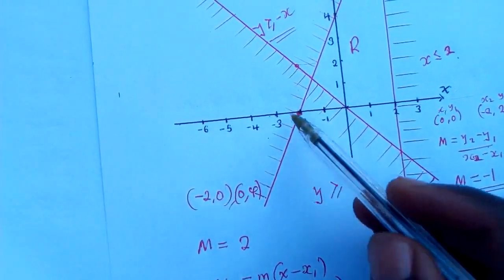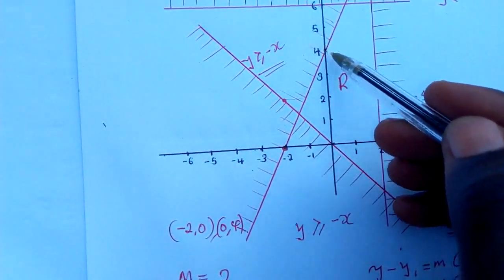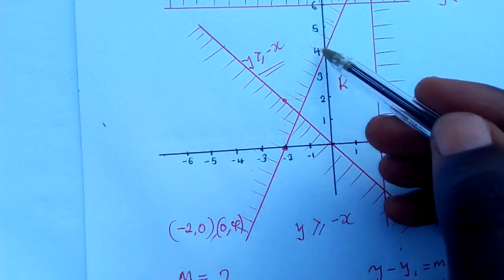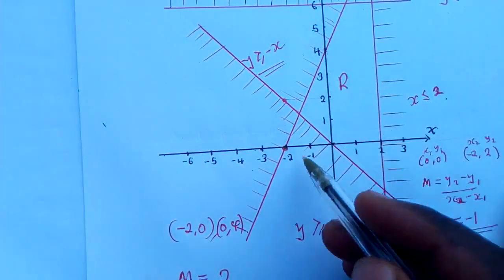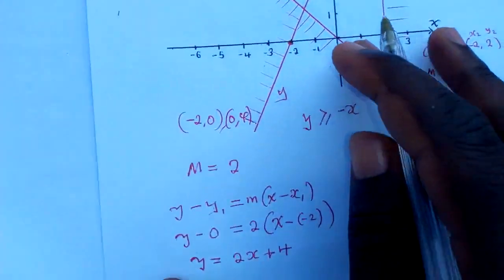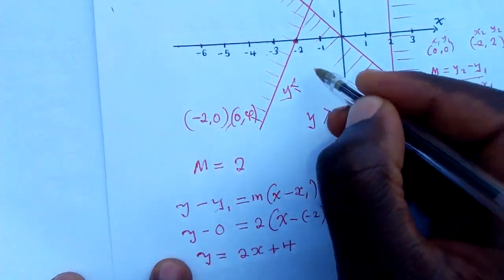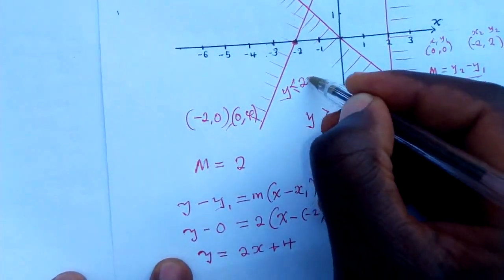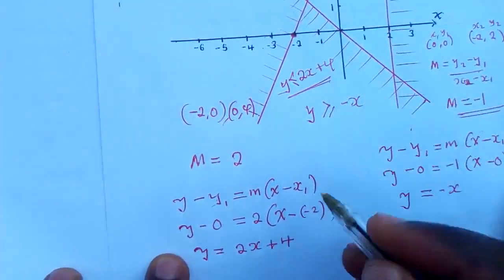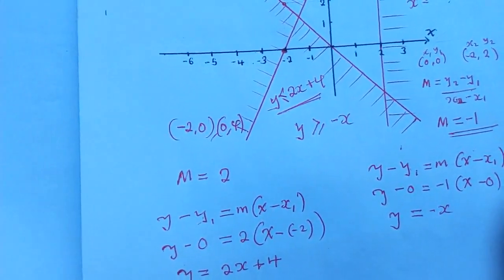Now check which part is being shaded — it's the greater side, so this equation will be less. The final inequality is y less than or equal to 2x plus 4. Thank you very much — subscribe to my YouTube channel to watch more videos.